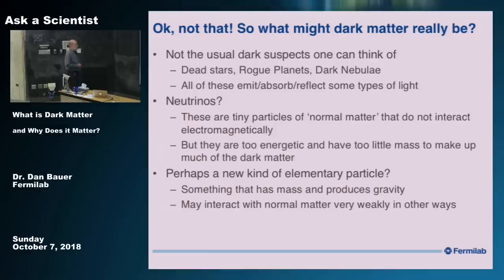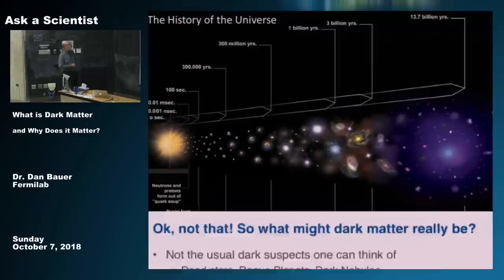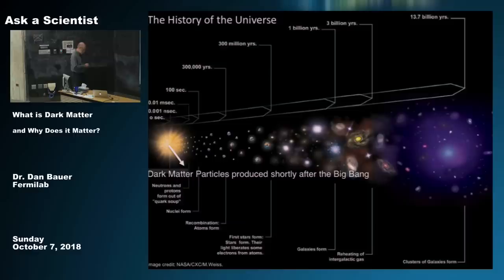Perhaps there's a new kind of elementary particle — it's what we do at Fermilab, we produce elementary particles and study their properties. Maybe there's something we haven't been able to make yet that has mass and therefore produces gravity, and may interact with normal matter but only very weakly so that we wouldn't have seen it yet. Where would it come from? It could have come from the same place all matter came from — the Big Bang. Dark matter particles could have been produced then and, if they're stable, could be around from that time. Normal matter was also produced then, but what we don't know is what happened to the dark matter in that period of time.